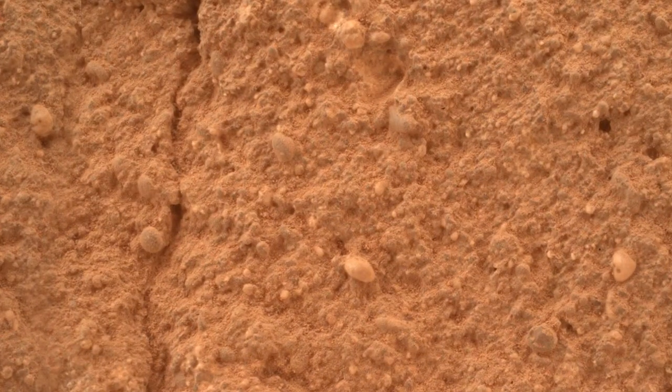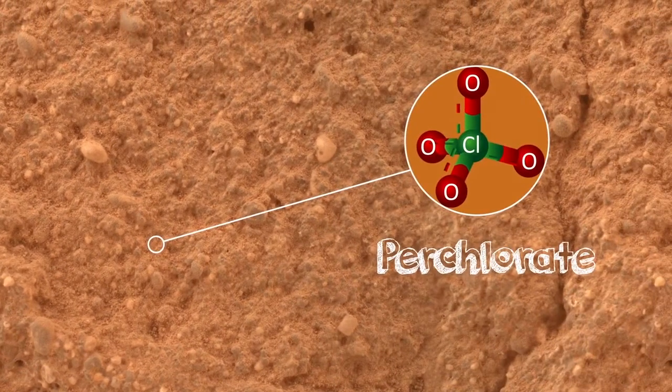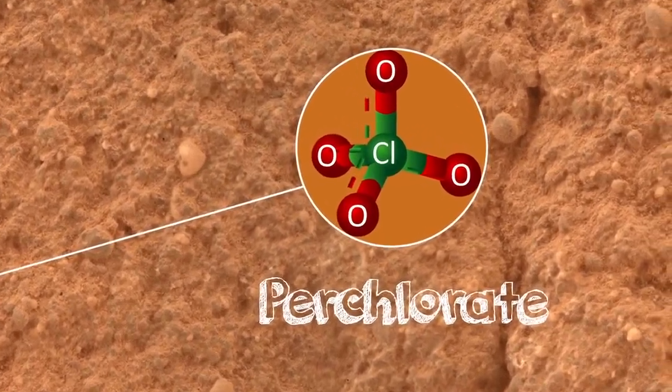Well, scientists have found what are called perchlorates in the sand. Perchlorates are compounds that have chlorine and oxygen bonded together.